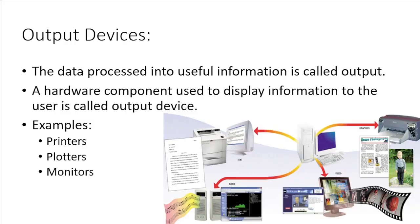First of all we will see what is an output. The data processed into useful information is called output. So a user can receive output from the computer on a screen or printed on the paper. A hardware component used to display information to the user is called an output device. Some examples of output devices are printers, plotters, monitors and so on.